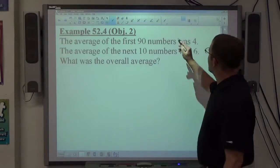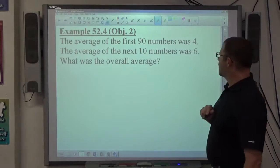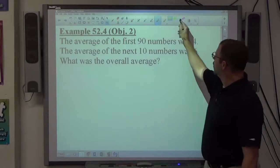Example 4: the average of the first 90 numbers was 4 and the average of the next 10 numbers was 6. What was the overall average?